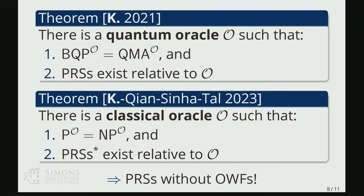you can actually construct worlds where NP is easy, so there are no one-way functions, and yet, nevertheless, you have pseudorandom states. So there's sort of two versions of this result,